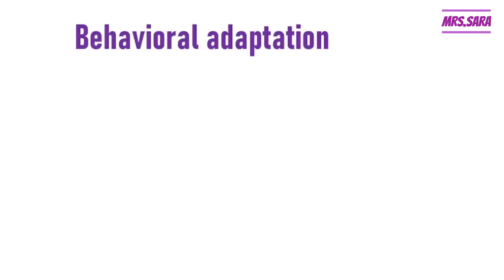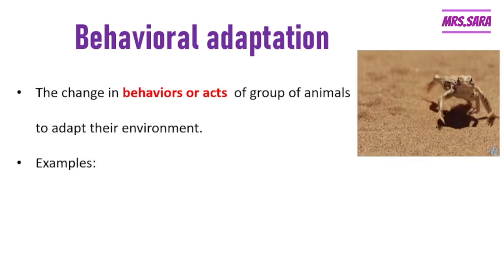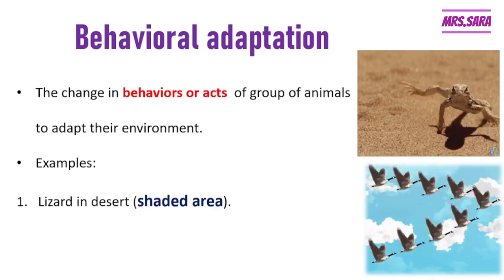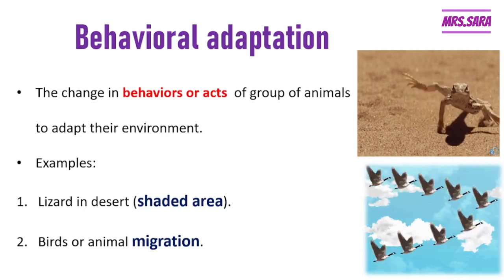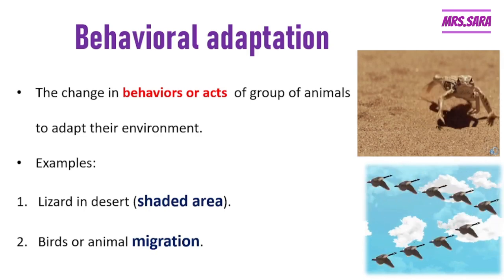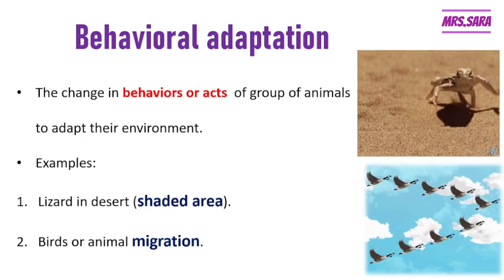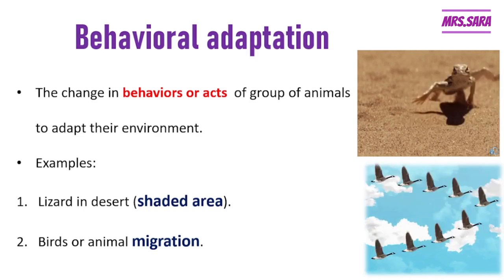The second type of adaptation is behavioral adaptation — the change happens in the behavior of the animals. Behavioral adaptation is the change in the behavior or the actions of a group of animals to adapt to their environment. Our first example is the desert lizard that searches for shaded areas on hot sunny days. The second example is migration of some animals or birds to another region.